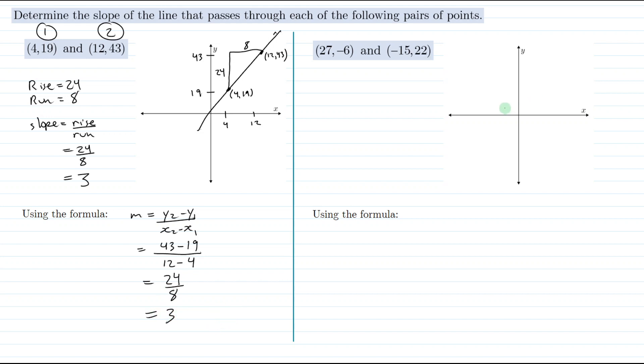For the second problem, we have points (-27,-6) and (-15,22). So I'll roughly plot those points for the first approach. (-27,-6) might be perhaps here, and (-15,22) might be perhaps here. Just a rough sketch.